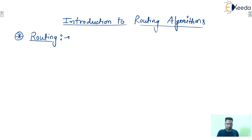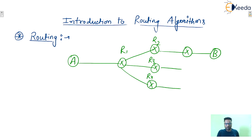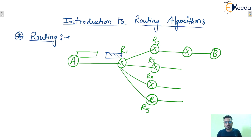Let us say one host A is there that is connected to one router R1. This is connected to router R2. One more router is there, then let us say B is the destination. This router is connected to one more router R3, and also to R4, and this one is connected to R5 also. Whenever A will transmit a packet, it will be forwarded to router R1. Whenever this packet comes to router R1, how does router R1 know on which path this particular packet must be forwarded?